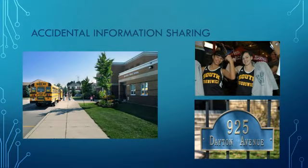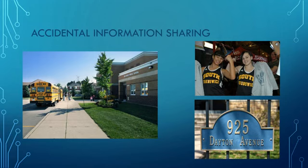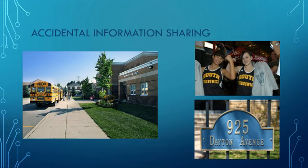Here are a few examples of accidental information sharing. The one with the school bus is almost okay, but on the building you can see 'Bullwood Public School,' which is bad because it shows where this person goes to school. The bottom right picture is bad because it clearly shows an address. The top picture is bad because on the girls' shirts you can read 'South Brunswick,' which is likely where they go to school. That's what accidental information sharing is — when you give away information about yourself without meaning to.